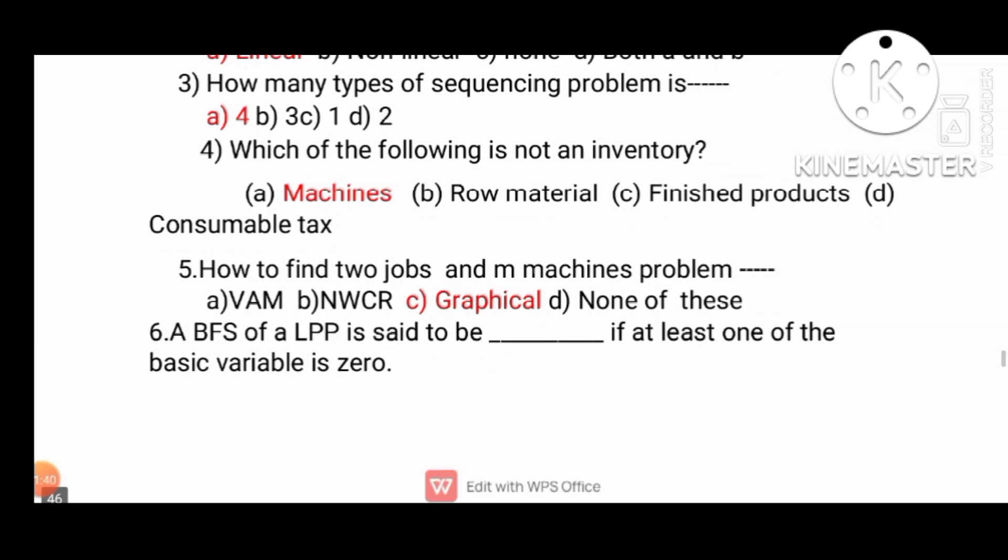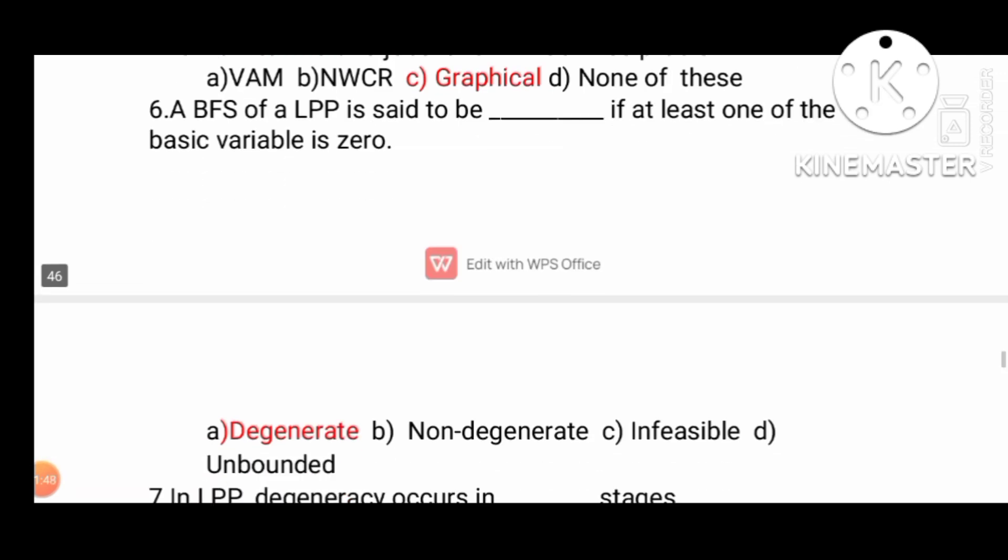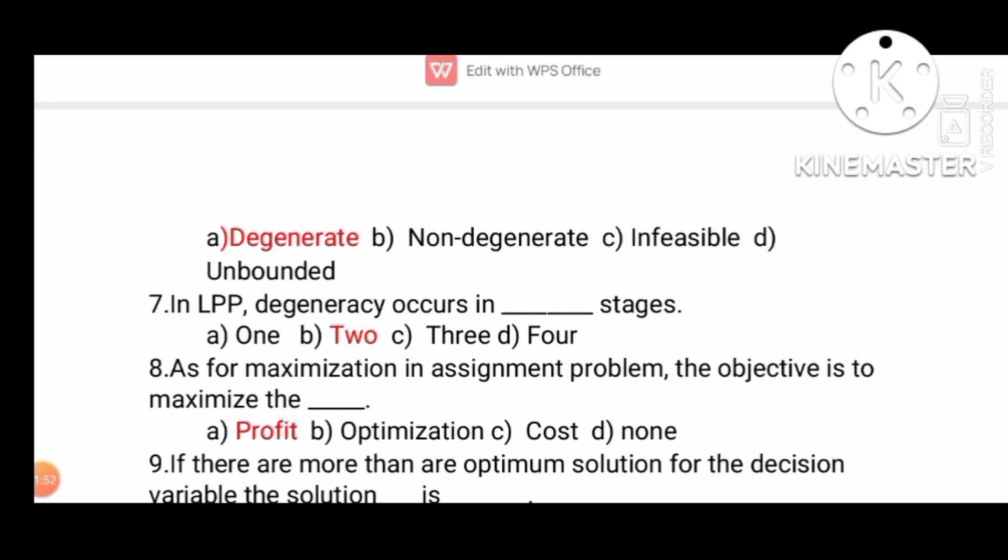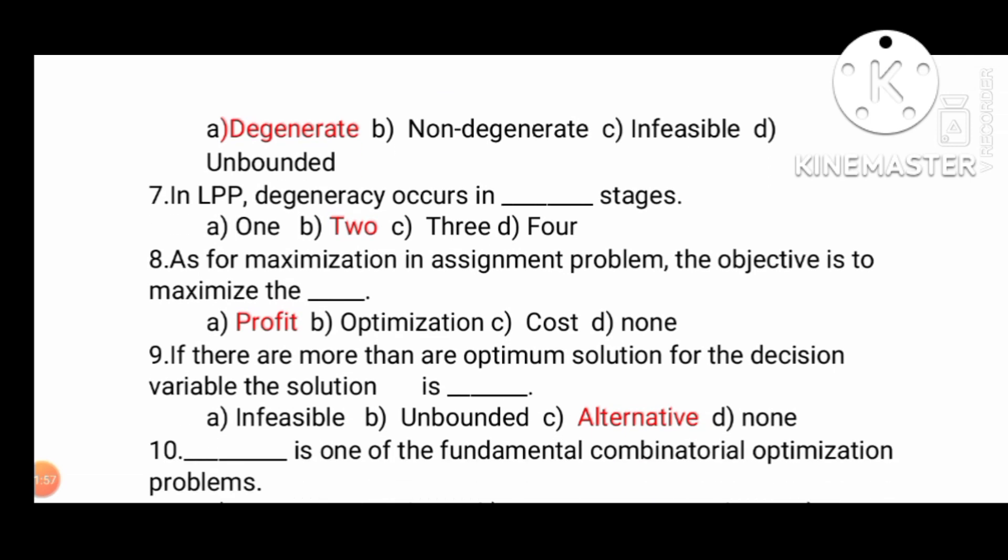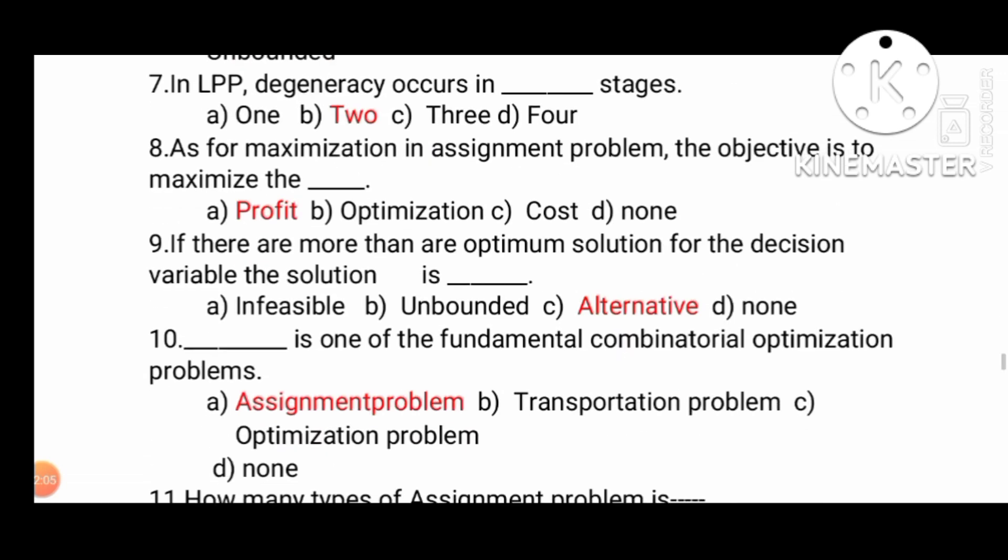Mechanics. How to find the job missing problem? Here is the missing problem, here is the graphical method. In LPP, the change occurs in two stages. As for maximizing the assignment problem, the objective is to maximize the profit.